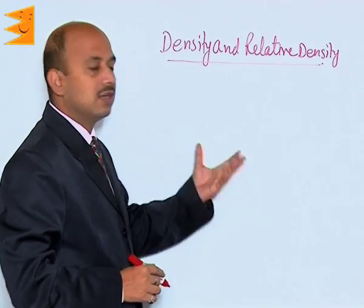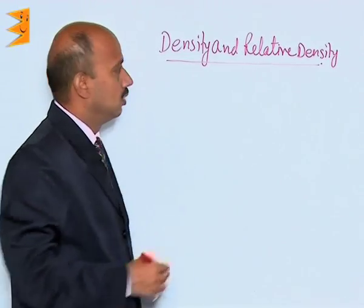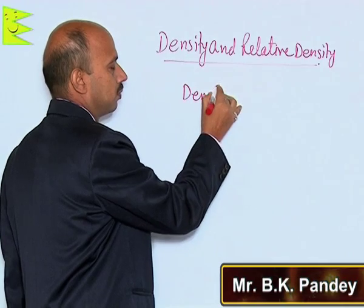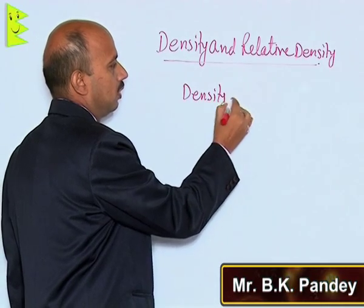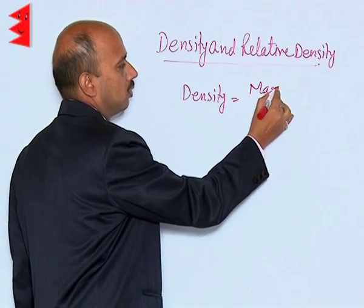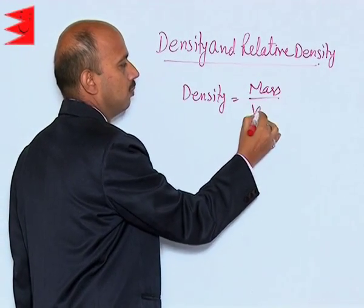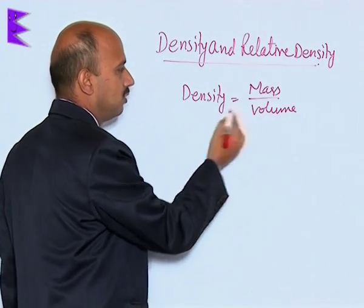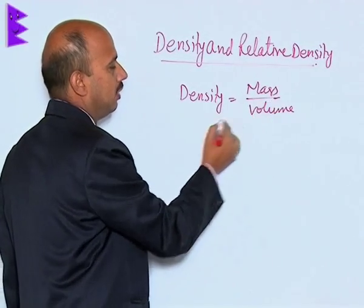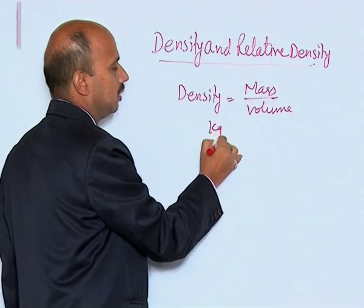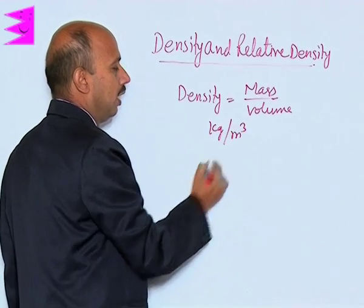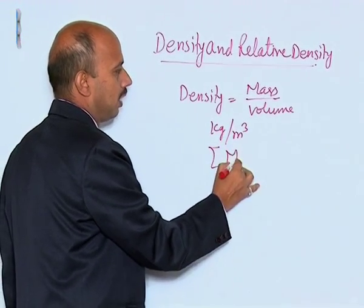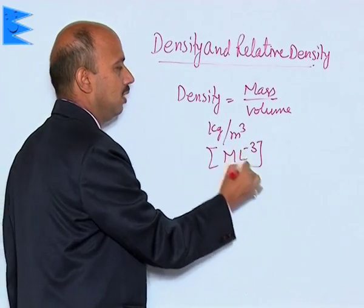Now, see here density and relative density. Density is equal to mass upon volume, and its unit is kg per meter cube, and the dimensional formula is M L raised to power minus 3.